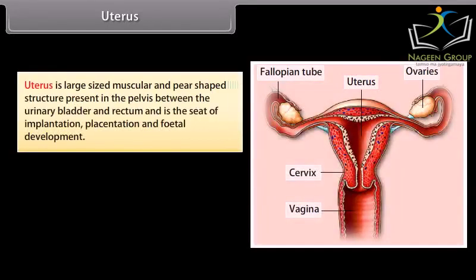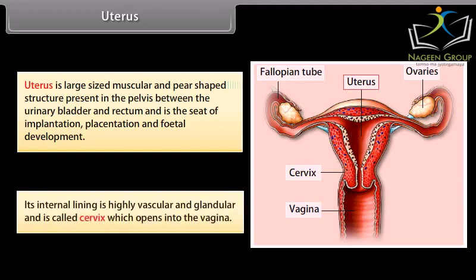The uterus is a large-sized, muscular and pear-shaped structure present in the pelvis between the urinary bladder and rectum. It is the seat of implantation, placentation, and fetal development. Its internal lining is highly vascular and glandular, and the lower portion called the cervix opens into the vagina.